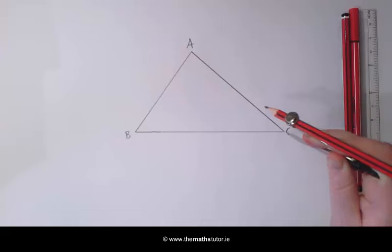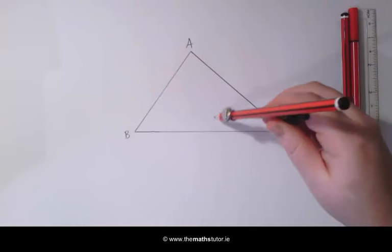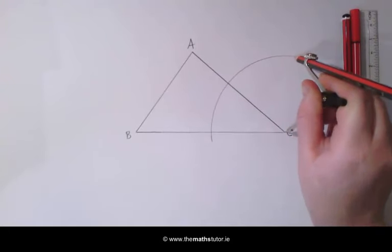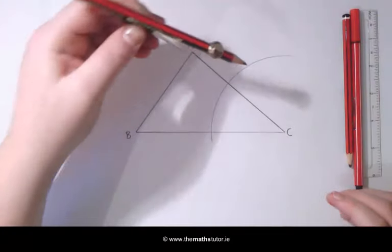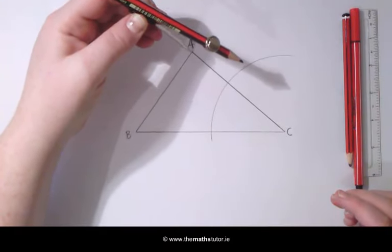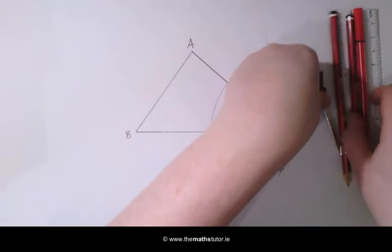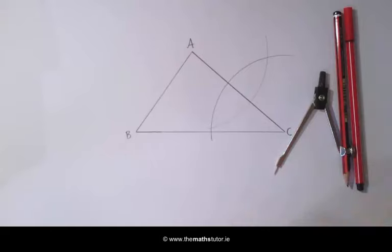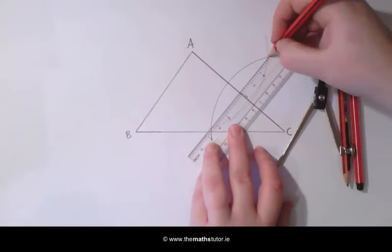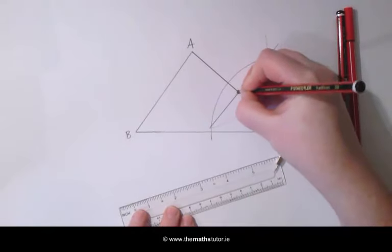So placing our compass on C and ensuring that our compass is greater than half, we are going to draw an arc across the line. Taking our compass and placing it on A without changing the width, we are going to draw another arc. We are then going to draw a line where these arcs meet and mark the midpoint of the line.